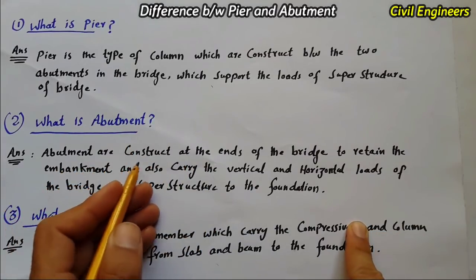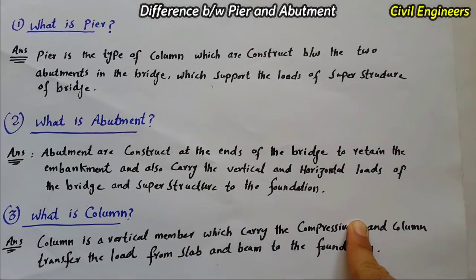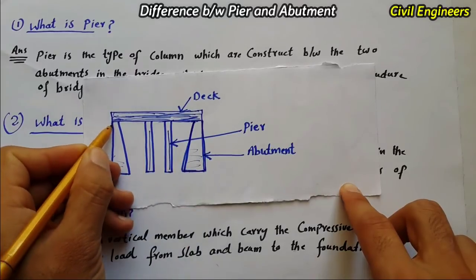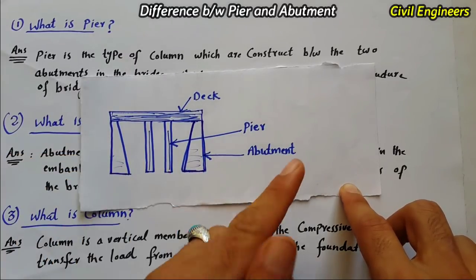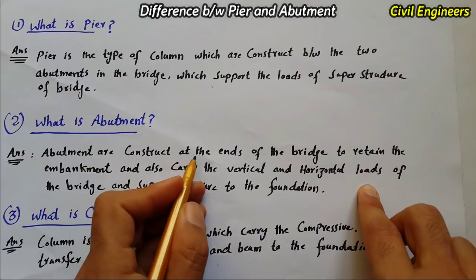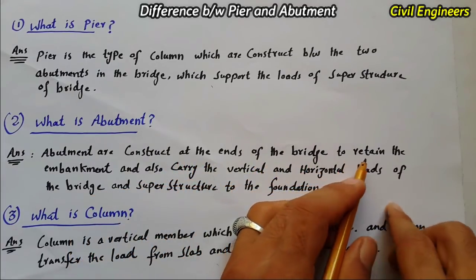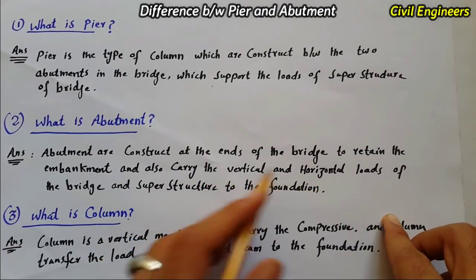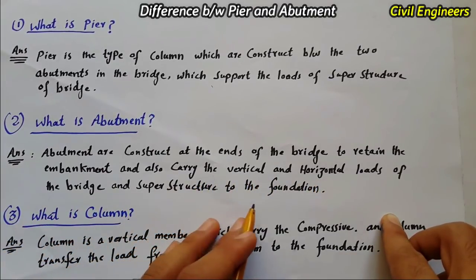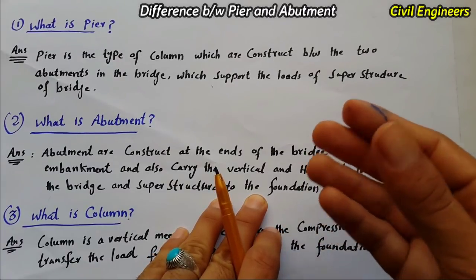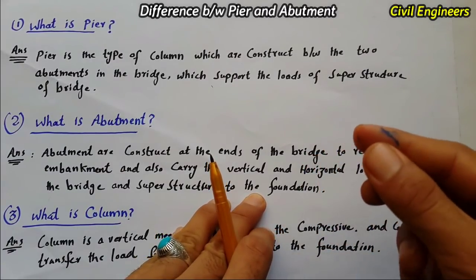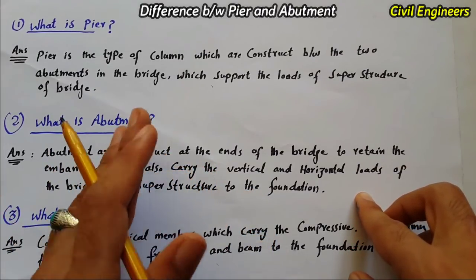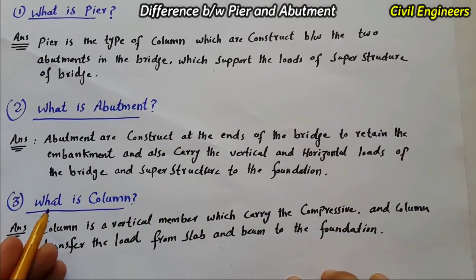Abutments are constructed at the ends of the bridge. These are the end supports — there are two of them. Abutments are constructed at the ends of the bridge to retain the embankment and also carry the vertical and horizontal loads of the bridge and superstructure to the foundation. So abutments are the end supports of the bridge which carry horizontal and vertical loads as well as superstructure load to the foundation.